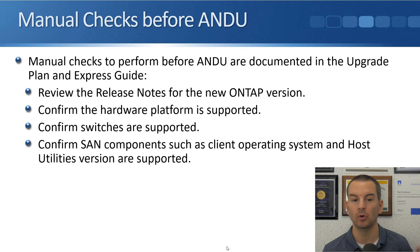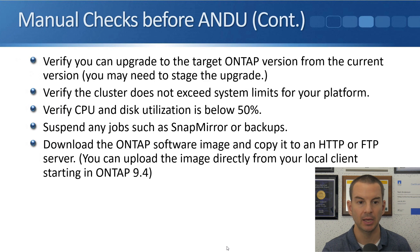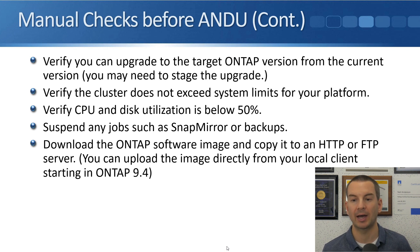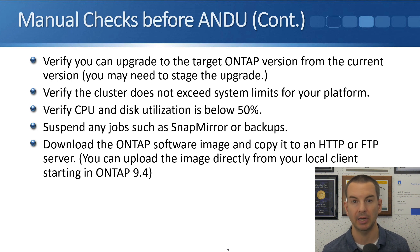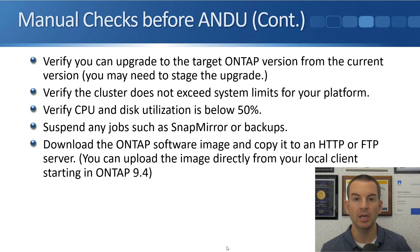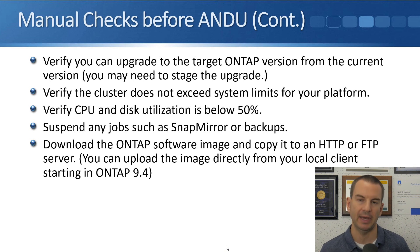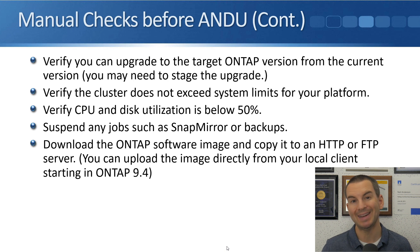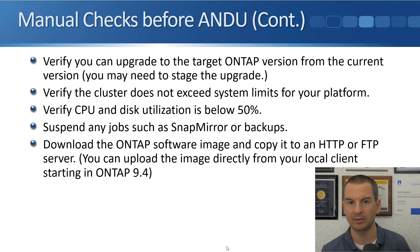Also check that the host utilities version that you've got on the clients is compatible with the version of ONTAP you want to upgrade to. You might need to upgrade the host utilities version as well as upgrading ONTAP. Verify you can upgrade to the target ONTAP version from the current version — you may need to stage the upgrade. For example, if you're currently on ONTAP version 9.2 and you want to upgrade to version 9.4, it's not possible to go straight from 9.2 to 9.4. You would have to upgrade from 9.2 to 9.3 first, and then from 9.3 you can upgrade to 9.4.